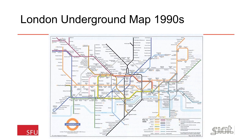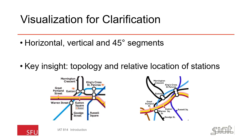The color coding is the same as previously, and you can clearly understand where you need to travel — say, from Totteridge and Whetstone down to Elephant and Castle, or to High Street Kensington. Planning in a map like this is easier simply because there's enough space to see where you need to change trains. Part of the technique here is to eliminate unnecessary detail — the real geography is reformulated and distorted to show lines only on horizontal, vertical, and 45-degree segments. The key insight is that topology and relative locations of stations is more important than the details of where the stations are geographically.